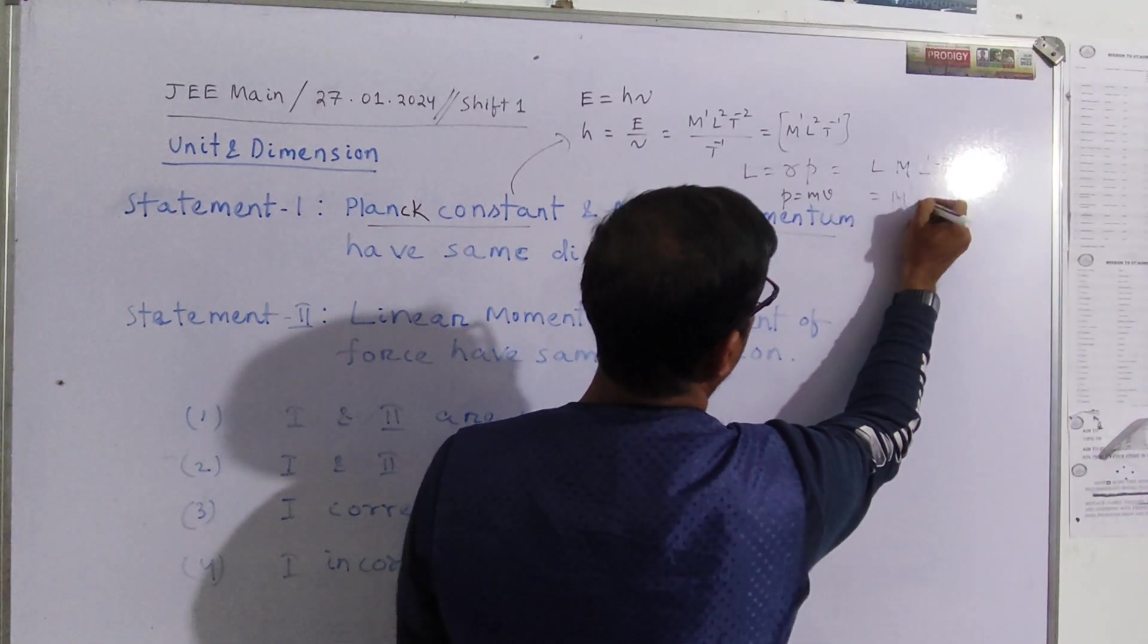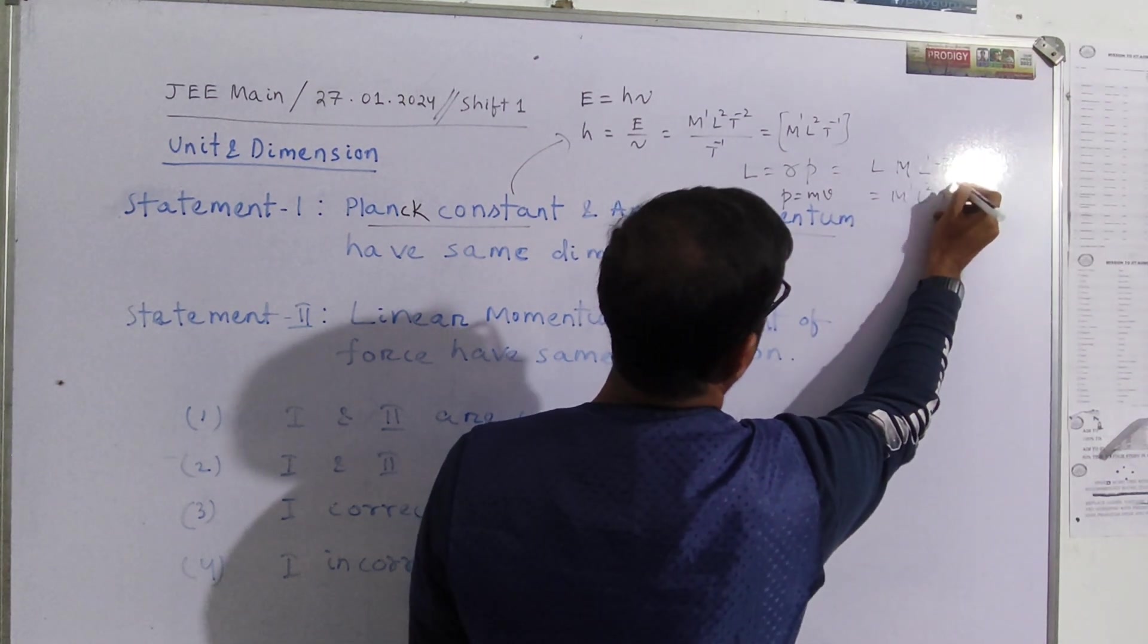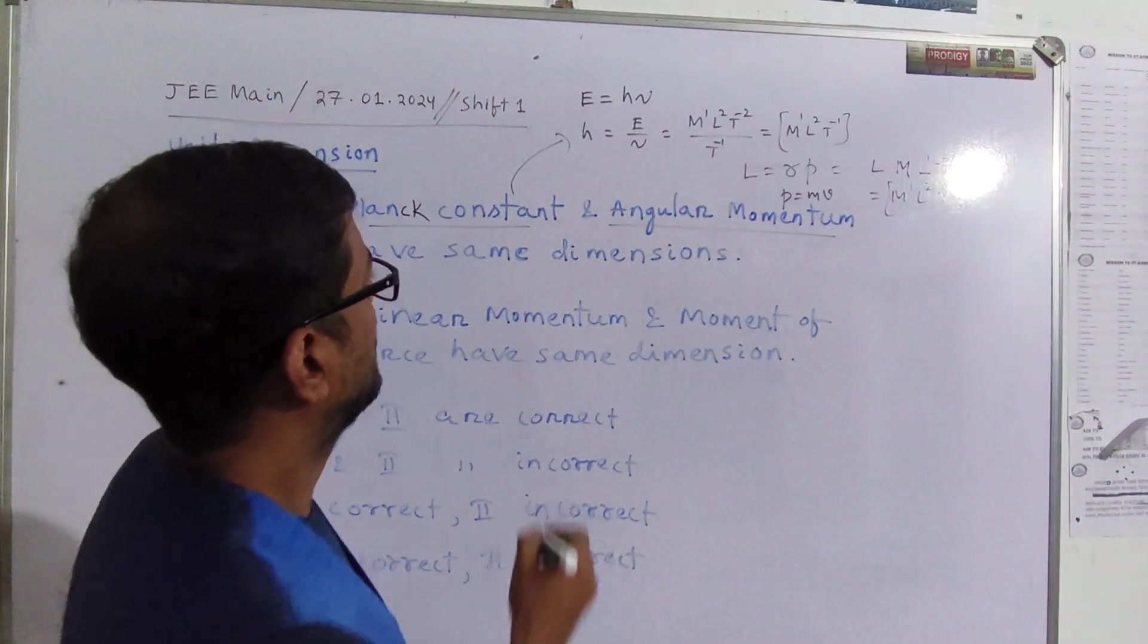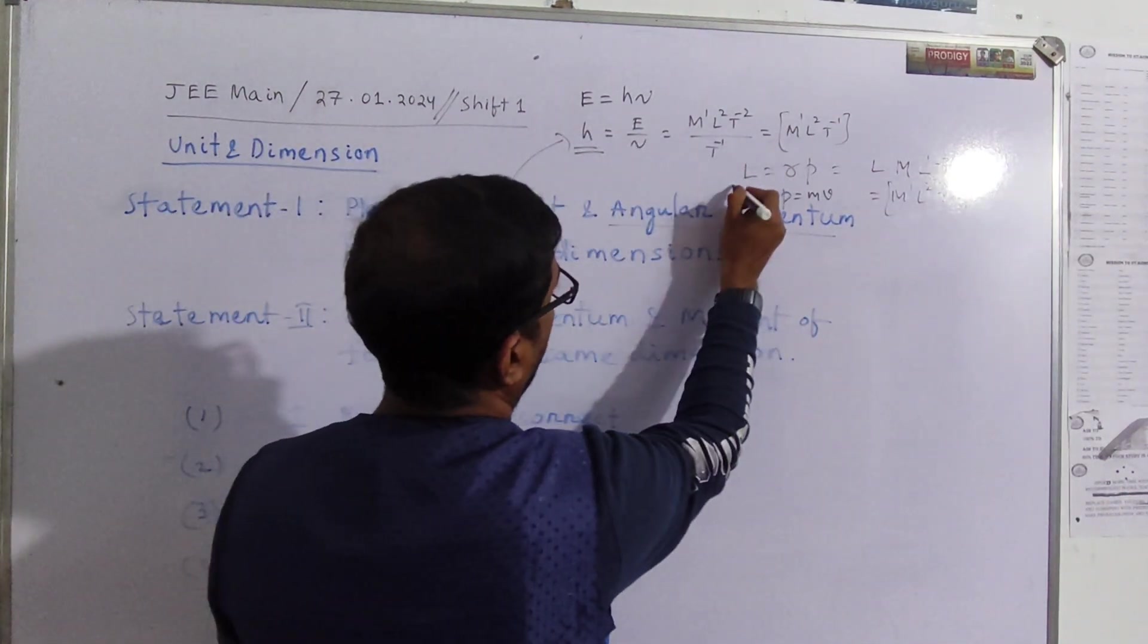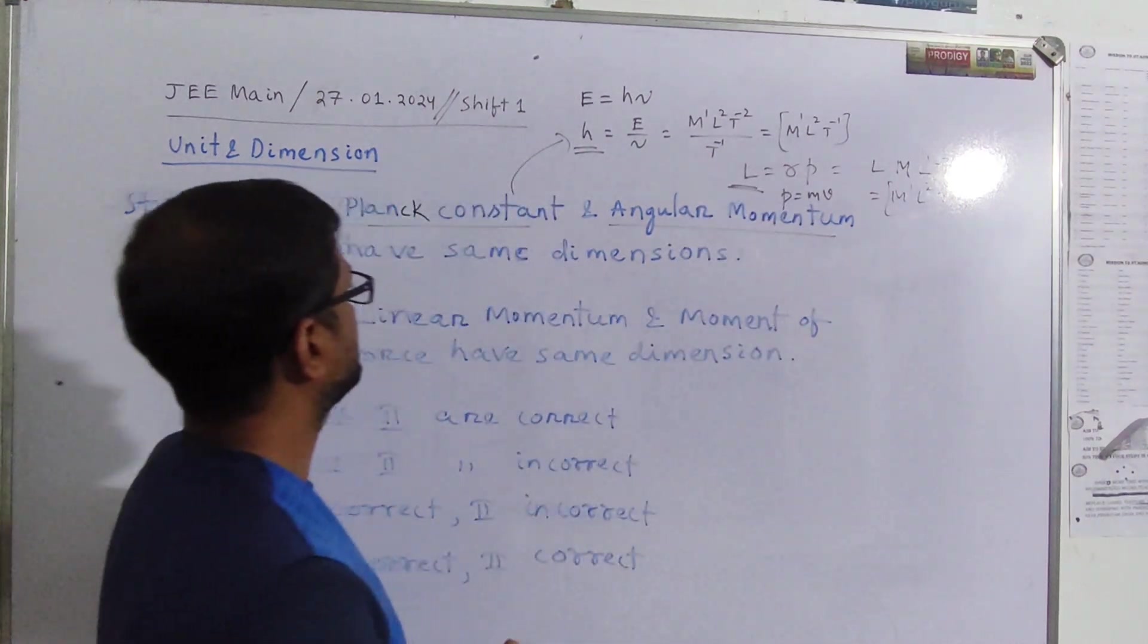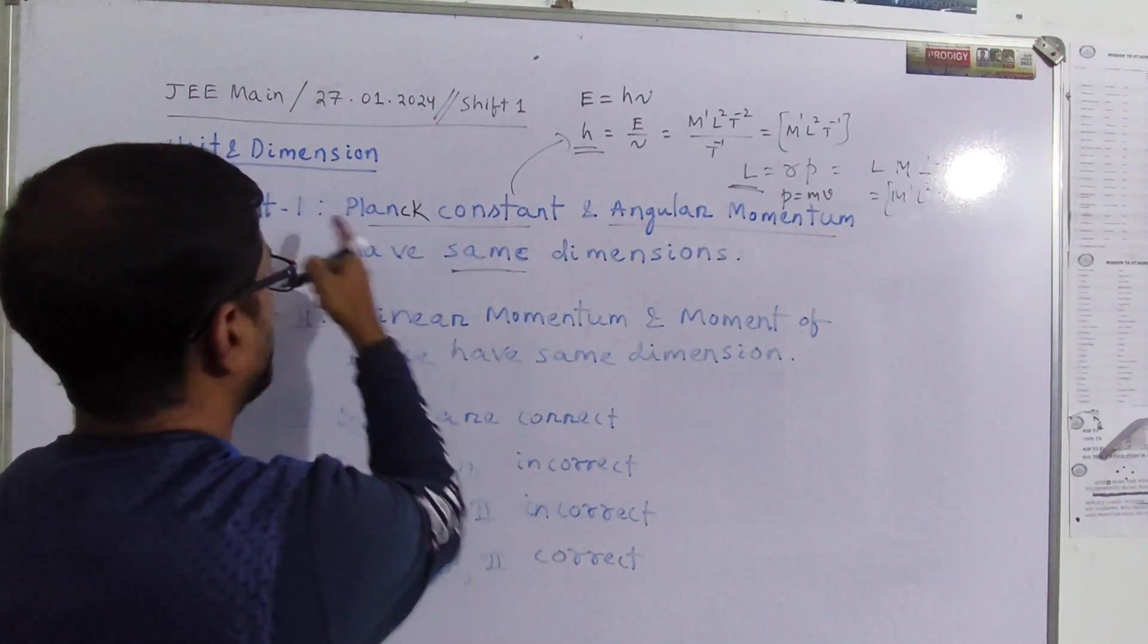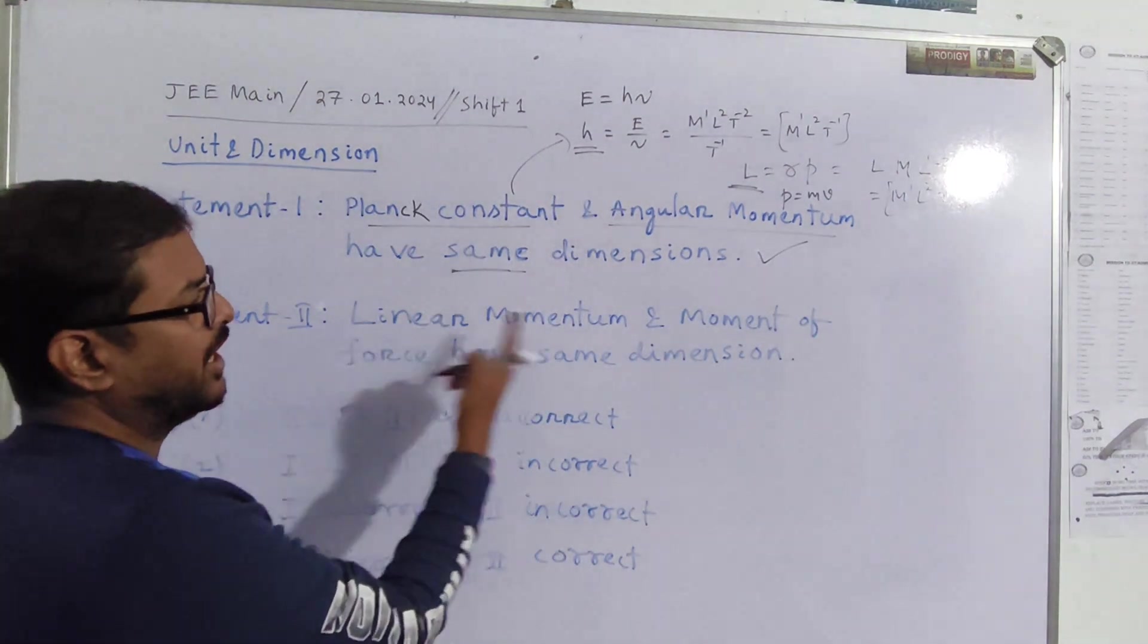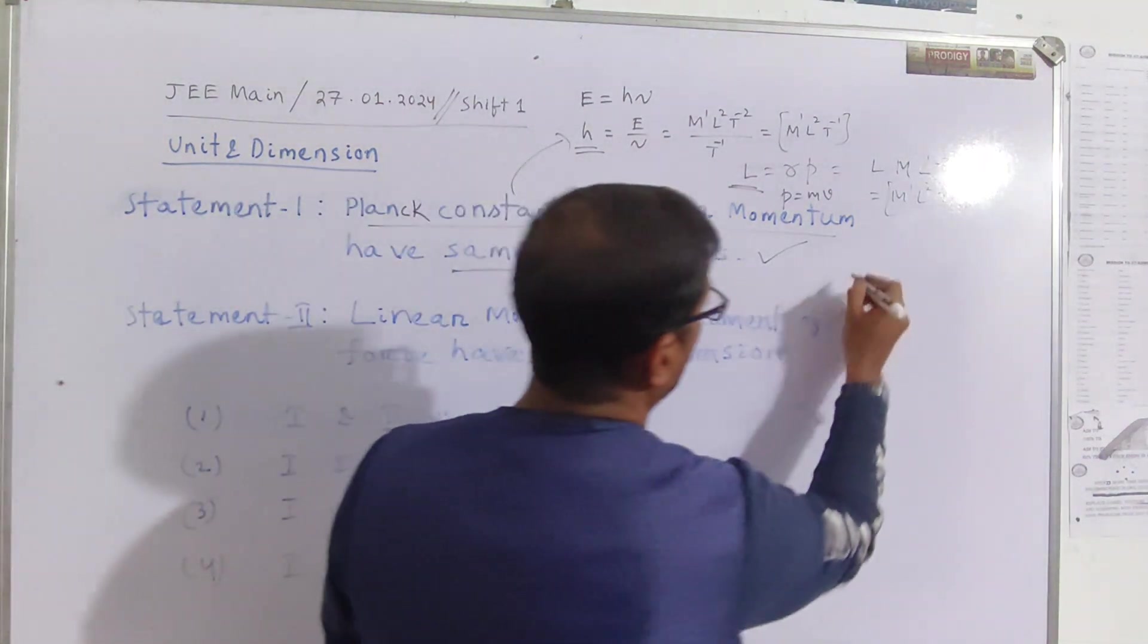So that will be again M1 L2 T minus 1. So it is clear that Planck's constant and angular momentum possess same dimension, so statement 1 is correct.